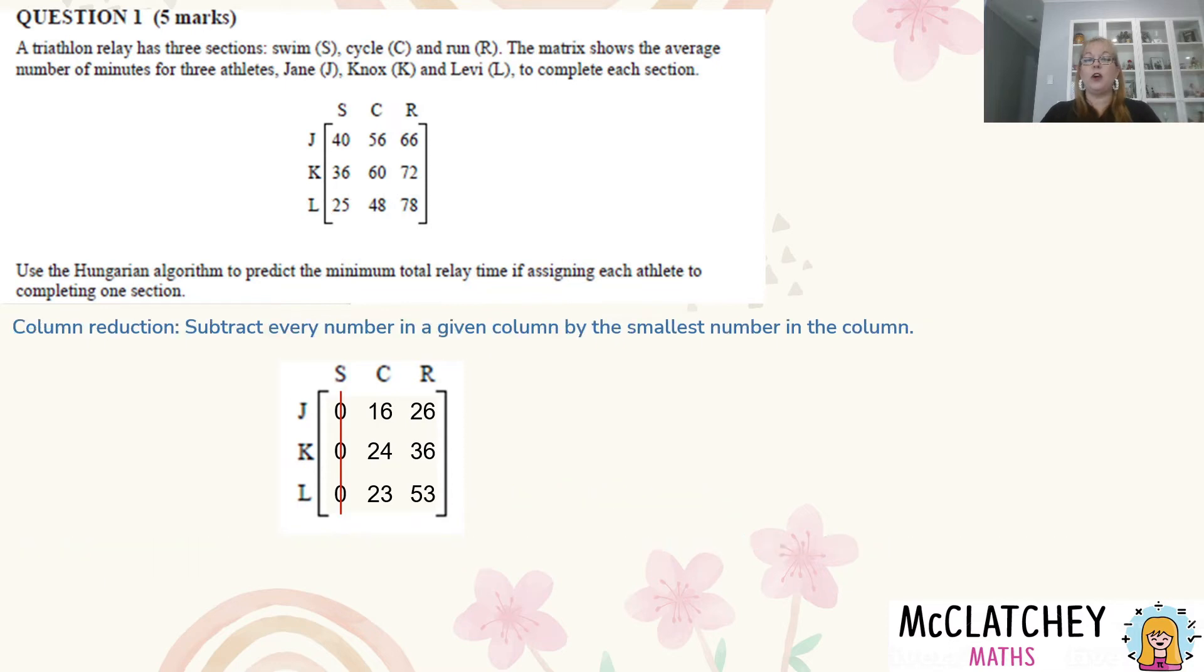So what we're going to do for our column reduction is we don't need to do anything with this one here because everything is already zero so we can ignore that column. We're just going to reduce these two columns here and we're going to find the smallest number in each column. So the smallest number in this column is 16. I'm going to take 16 away from 16 and I'm going to get zero. 24 take away 16 I get 8, 23 take away 16 I get 7.